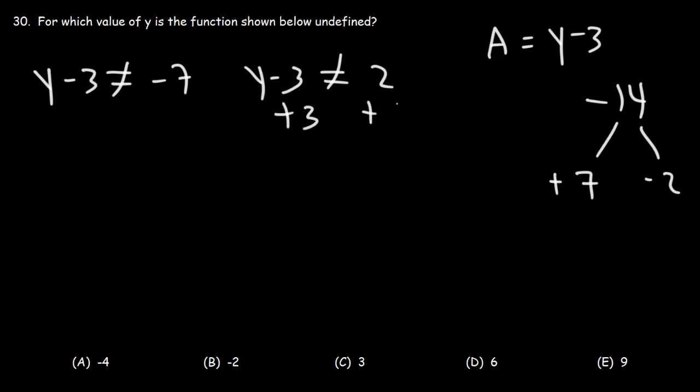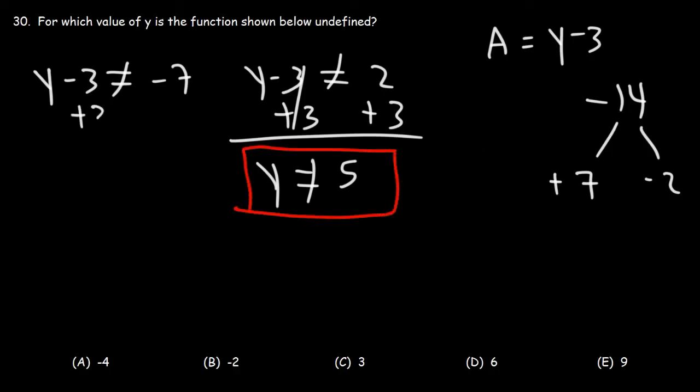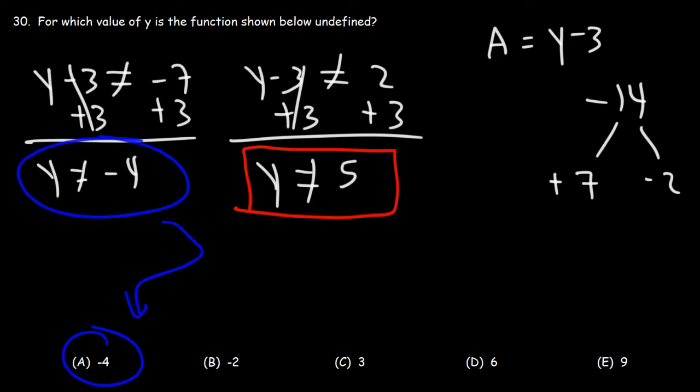So let's add 3 to both sides. So we see that y can't be 5. Otherwise, the function will be undefined. Now this answer is not listed. For the next one, we need to add 3 to both sides. Negative 3 plus 7 is negative 4. So this is the one that we're looking for, which is answer choice A. So negative 4 will cause the function to be undefined.